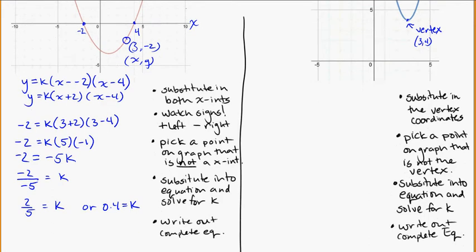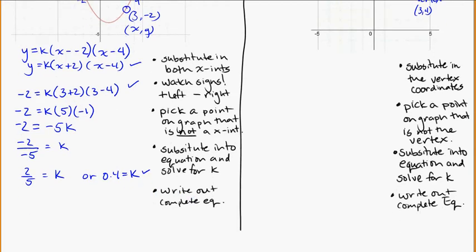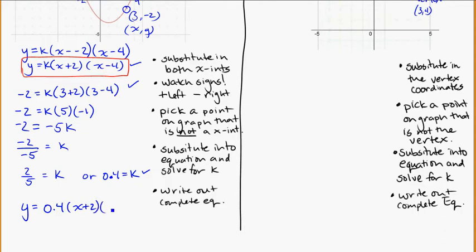For full credit, show your algebra. If you're not strong with algebra, you can use Solver to double-check, but make sure you've shown the substitution steps before your answer. And don't forget the last step: write out the complete equation. The scale factor is k = 0.4, so the final equation is y equals 0.4 times (x plus 2) times (x minus 4).